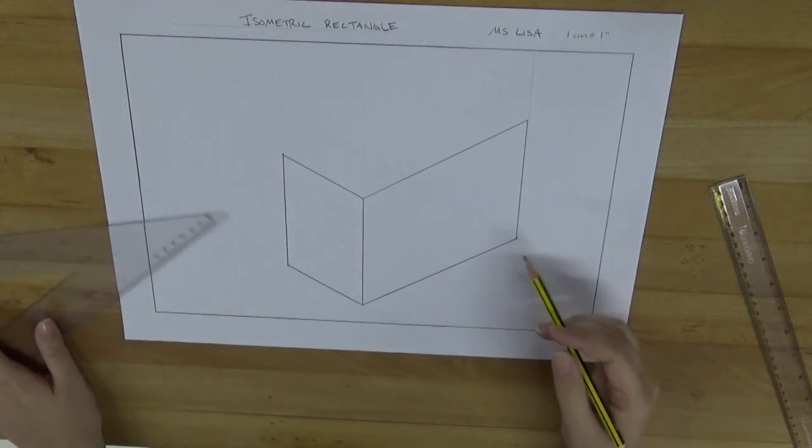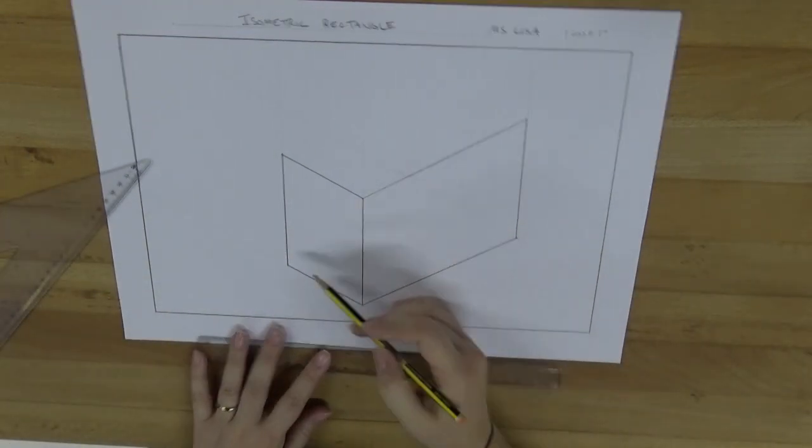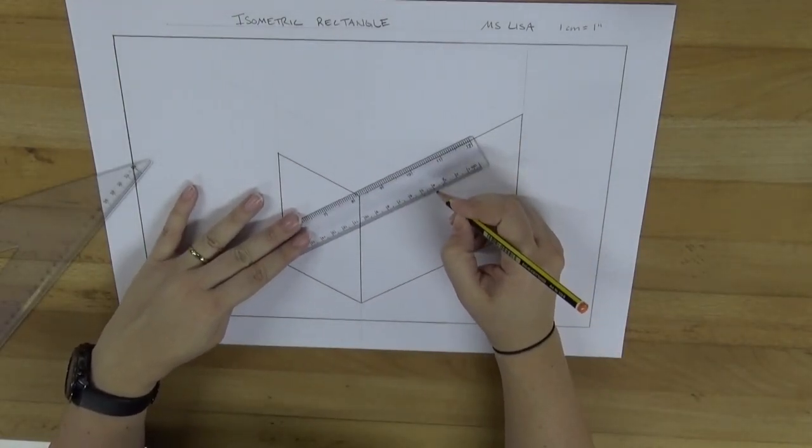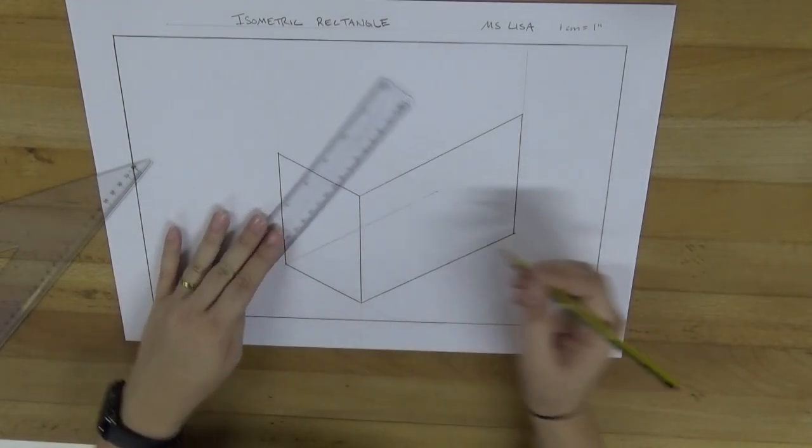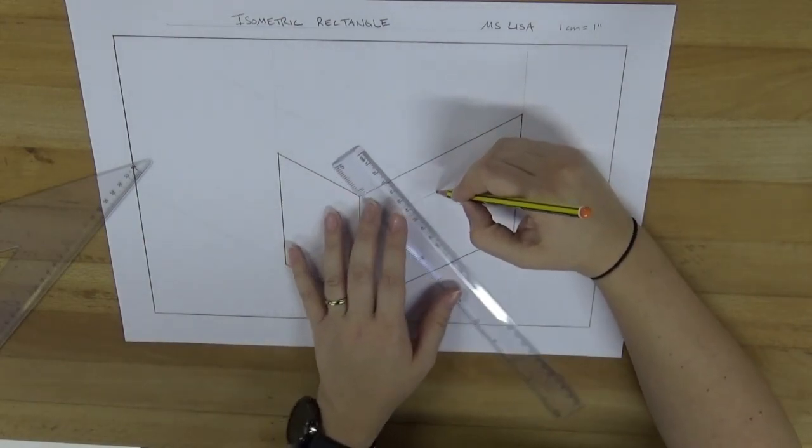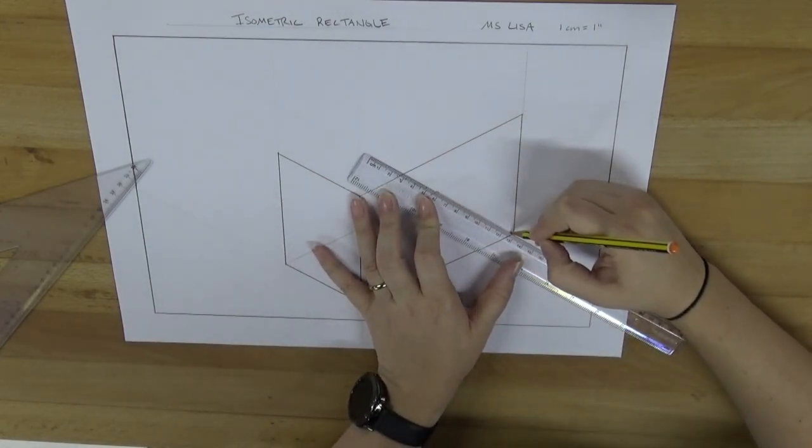There we go. So now you might be able to see already that we've started to form the bottom of our box. This is something that we wouldn't normally be able to see unless our box is see-through. There we go.